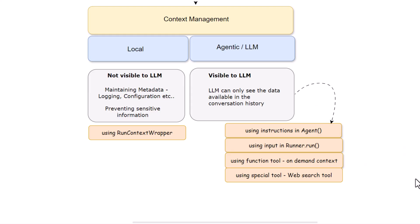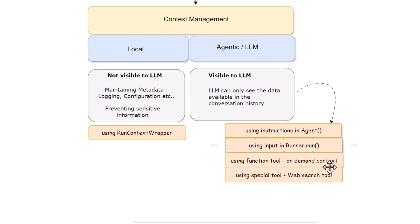There are also special tools available in the OpenAI agent SDK, like the web search tool, which also has to be passed under the tools category. Whatever information is retrieved from the web can also be passed as context. We have already explored these options in earlier videos, so we know how to pass all this context to LLM.